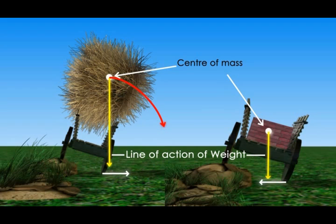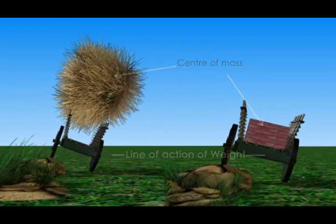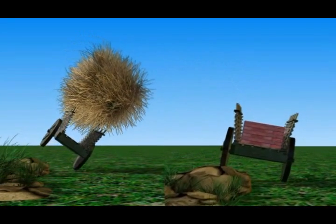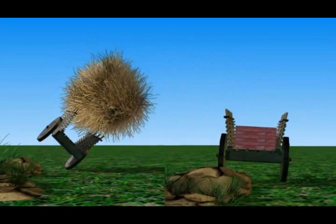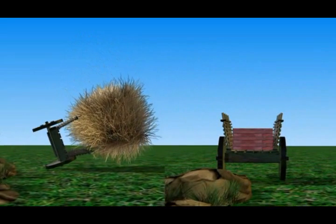When the cart with bricks passes over the rocks, its line of action of weight lies within the area of the cart. But when the cart with hay passes over the rocks, its line of action of weight goes outside the area, and as soon as that happens, the cart falls over to the other side.